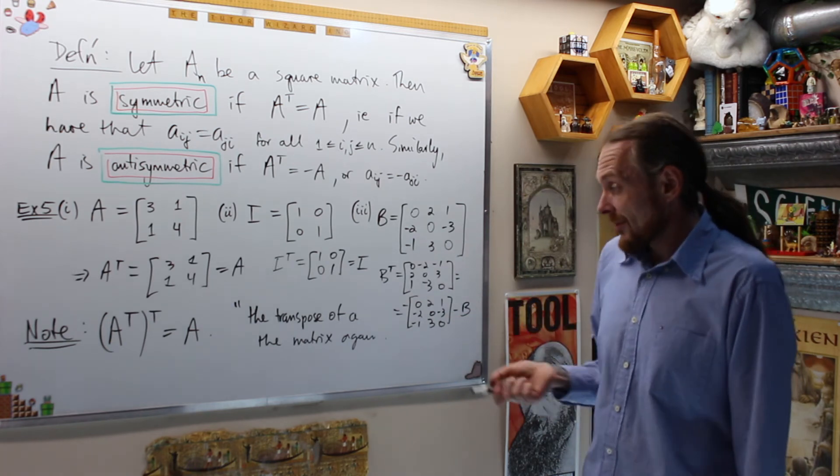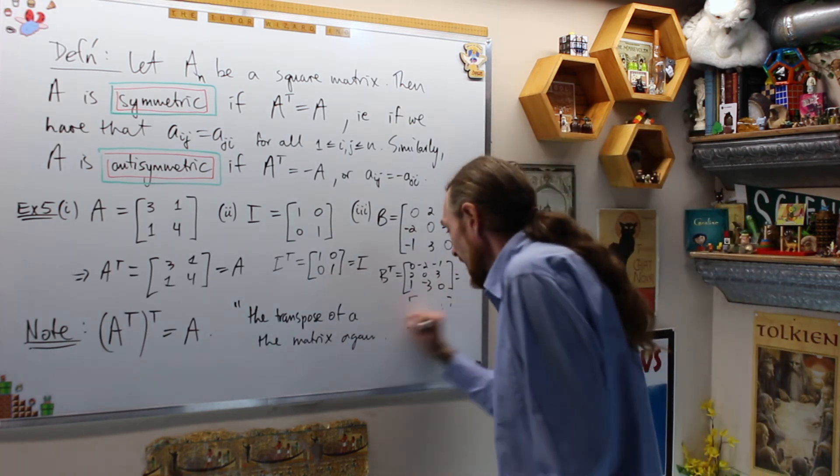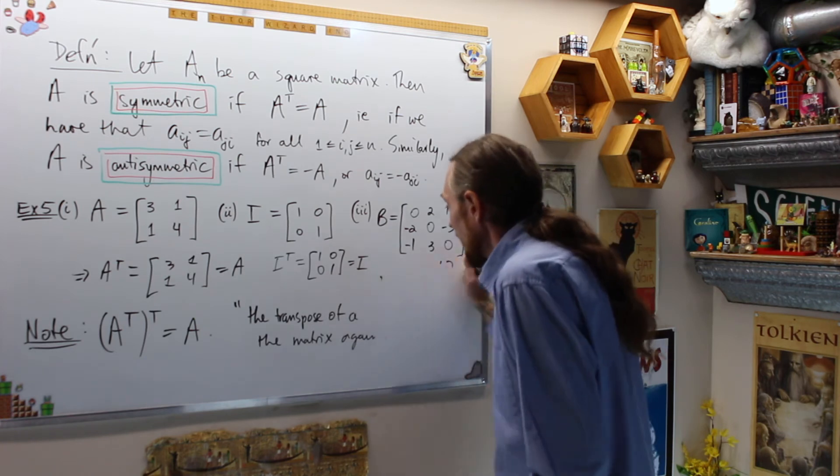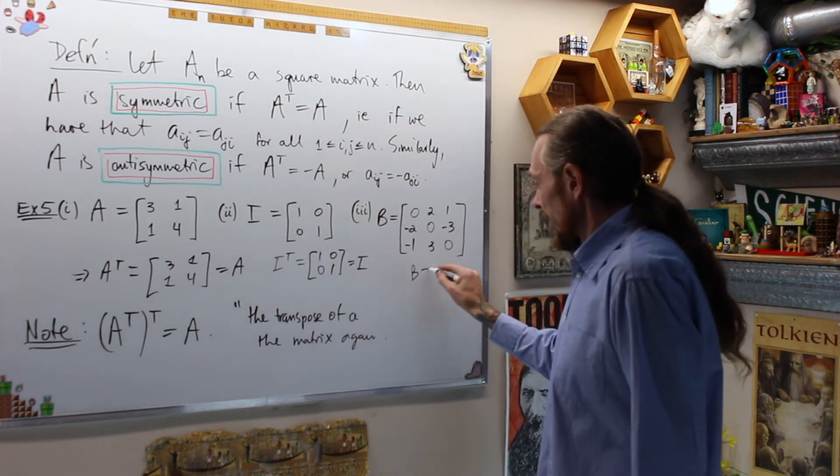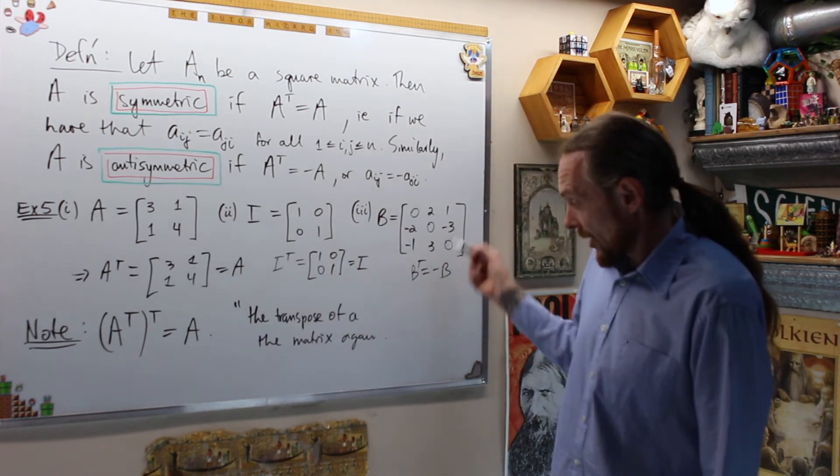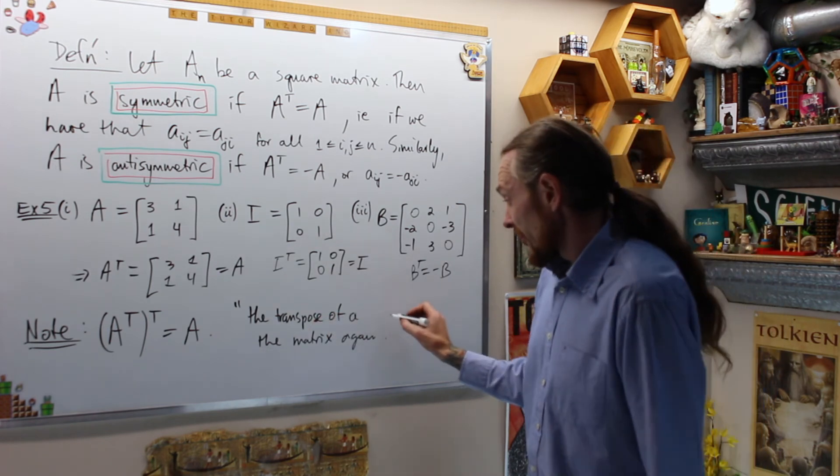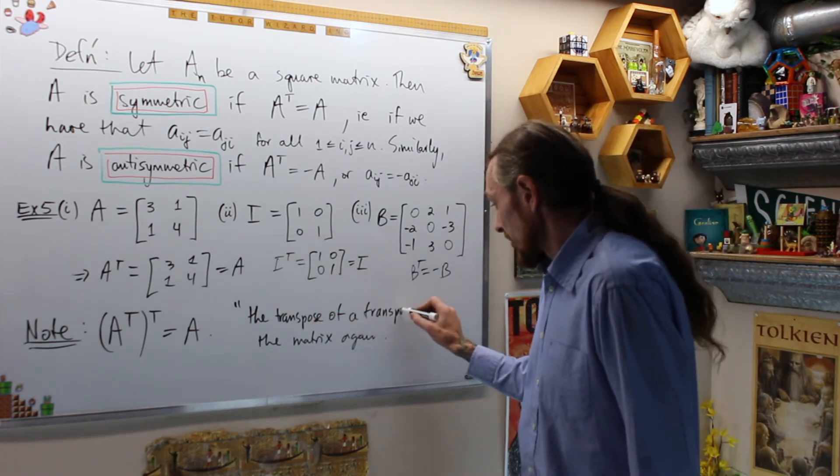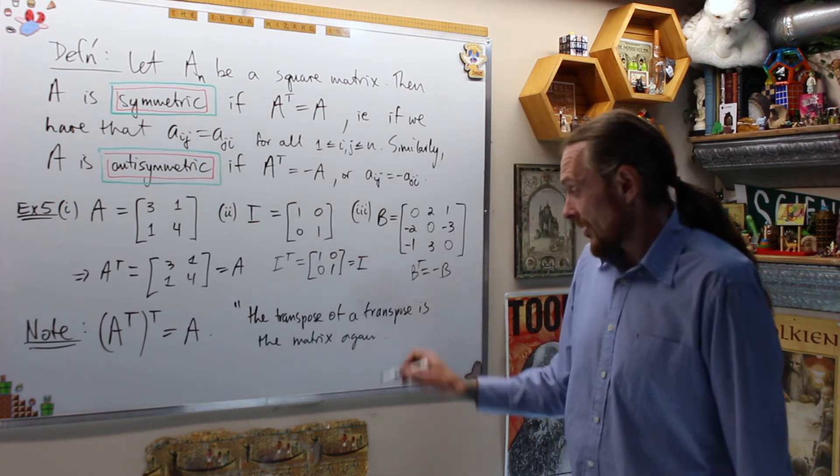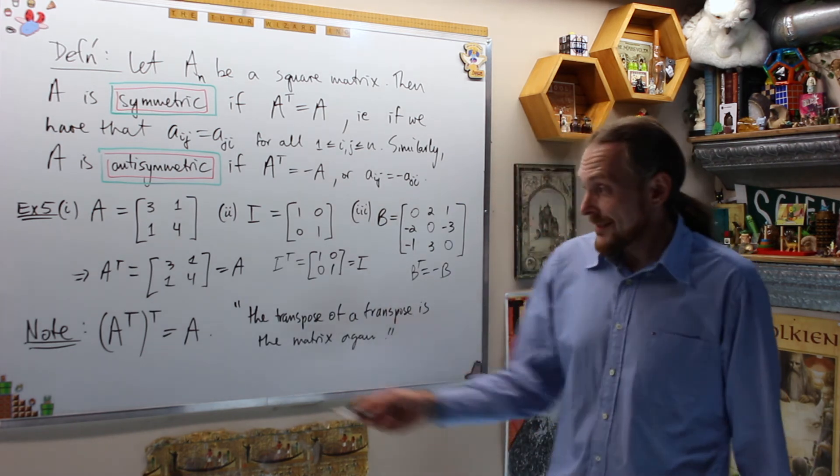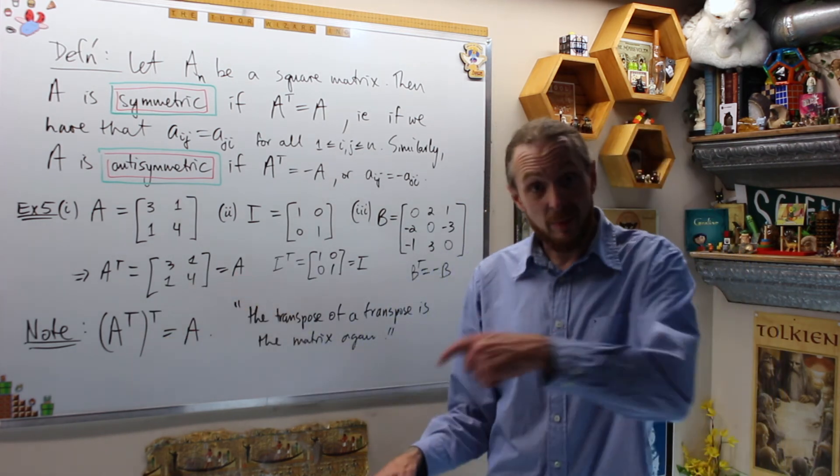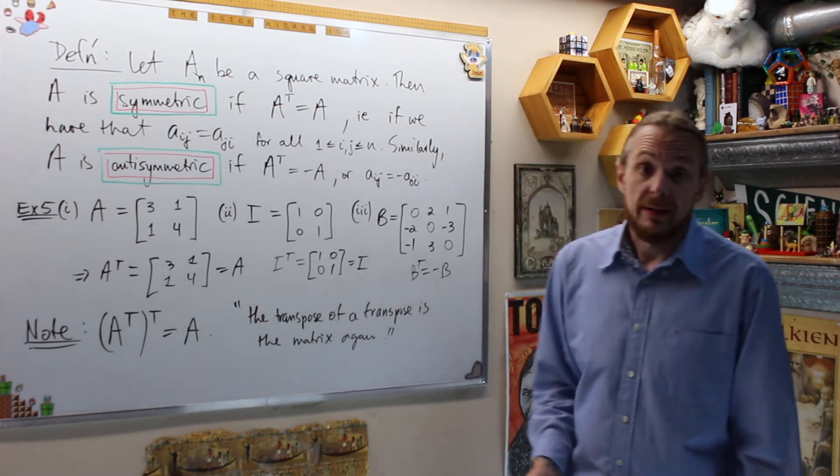I'll speed that up in the editing, but there you go. This is B transpose is negative B. Therefore, this is an anti-symmetric matrix. Now, that ruined my quote. So, right here, B transpose is negative B. You can check, but transpose of a transpose is the matrix again. So, what that says is, if you take the transpose, and then you transpose it again, you're going to get the matrix back every time.